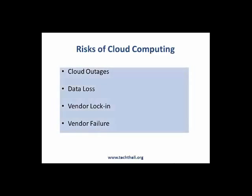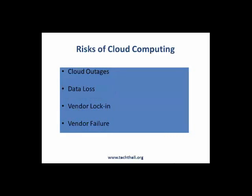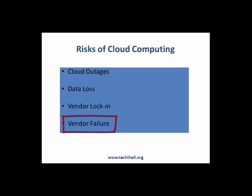There are some generic risks associated with the cloud. One: cloud outages — any technical outage can result in the non-availability of the application deployed in it. Two: data loss — any incident of hacking can result in data loss. Three: vendor lock-in — this is mainly applicable to platform as a service and software as a service cloud models, as some level of tweaking is required to move an application from one cloud to another. Four: vendor failure — the vendor can end up in financial trouble resulting in closure of the infrastructure, which will force its customers to find an alternative solution.